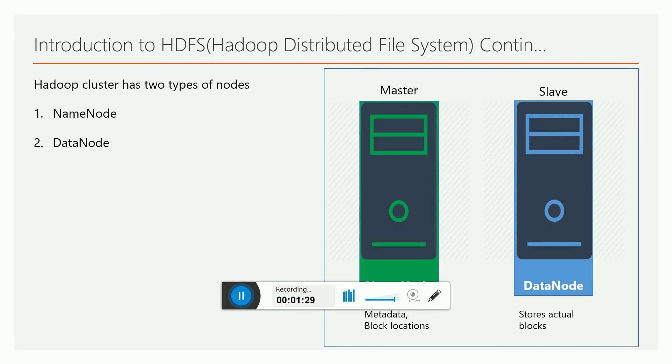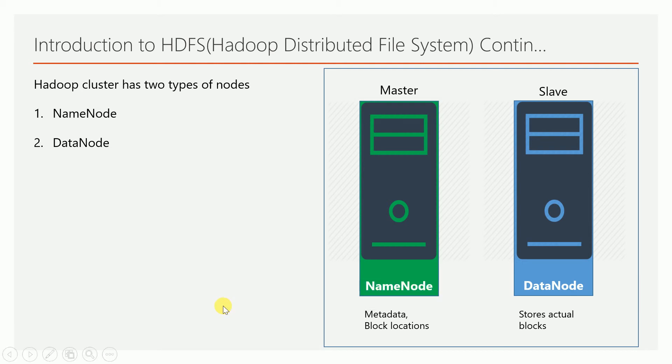Before going into the write operation, as I mentioned in the earlier video, we have two types of nodes in the Hadoop cluster. One is the NameNode, which holds the metadata information about your files and directories in HDFS, as well as block information. The other node is called the DataNode, or slave node, which actually stores the actual block data. We also have a Secondary NameNode which takes periodic copies from the master NameNode.